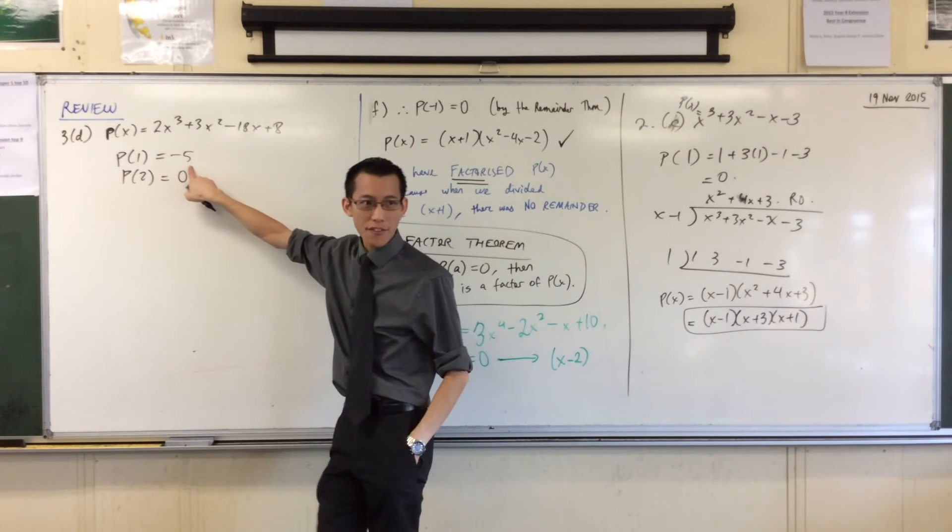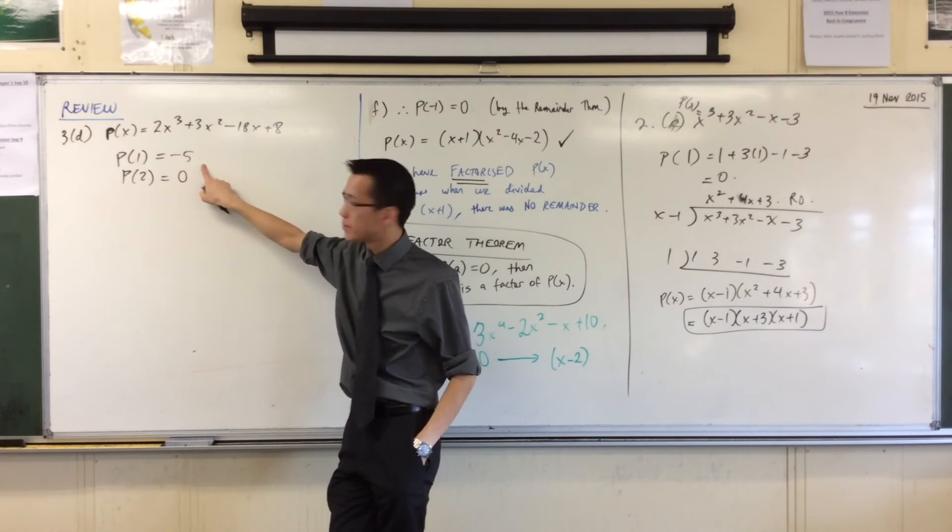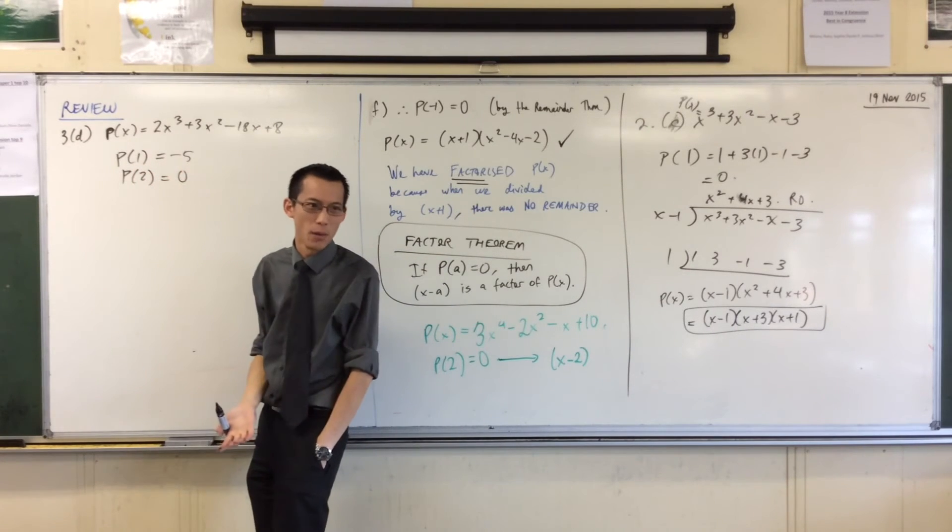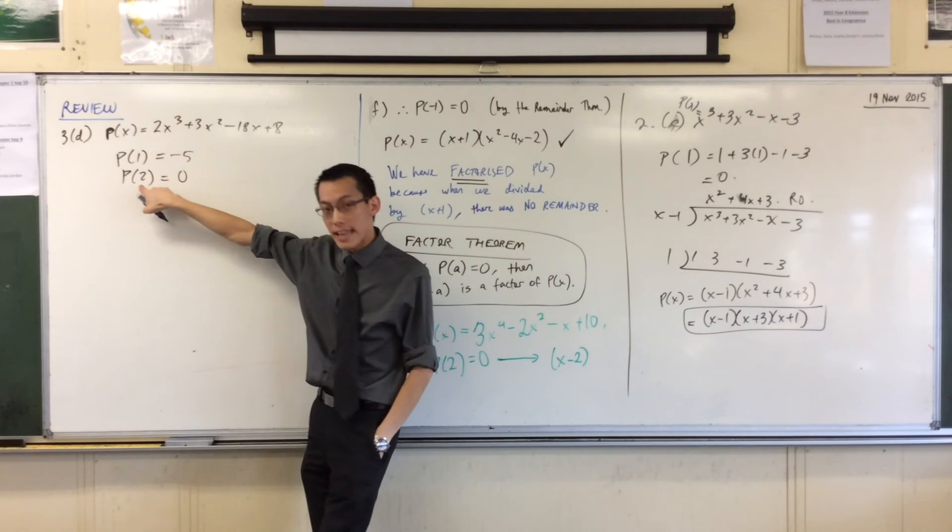But you'll notice, when I tested out one in this case, it didn't work out for me. Right? What does this mean? If I divide by x minus one, I'm going to get a remainder. That's kind of not what I want. Right? Ah! But the next number I try, and it didn't take as long, right?